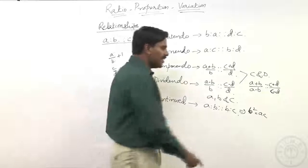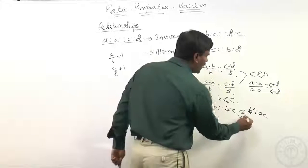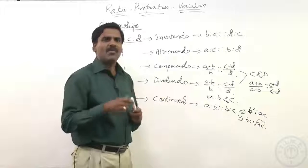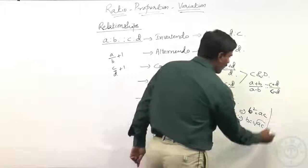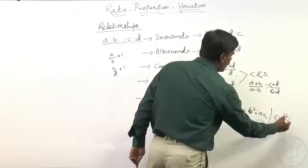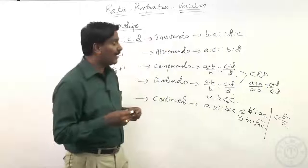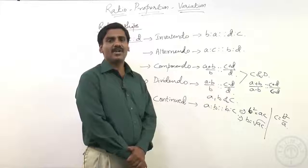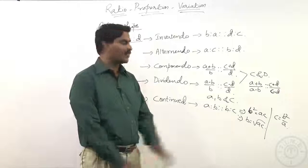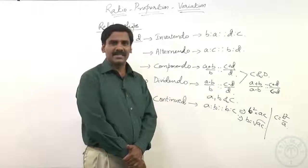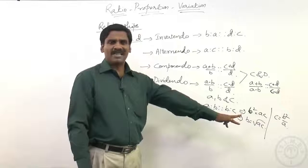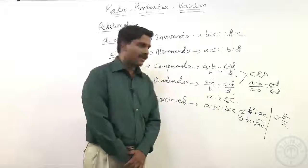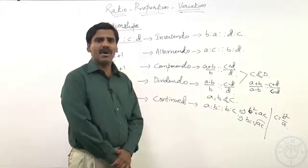Using the basic property — product of means equals product of extremes — we get b squared equals a times c. So b can be written as square root of a times c, and b is called the mean proportion. From b squared equals a times c, we can also say c equals b squared by a — that third term c is called the third proportion. So mean proportion is the square root of the product of the extremes, and the third proportion is b squared by a.